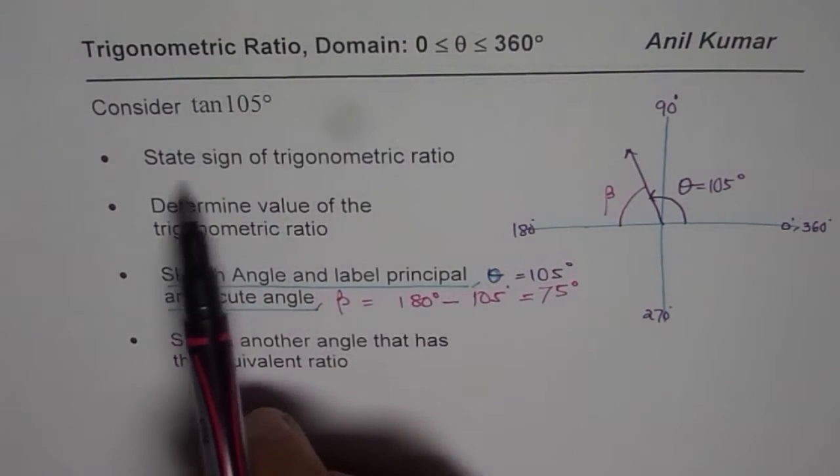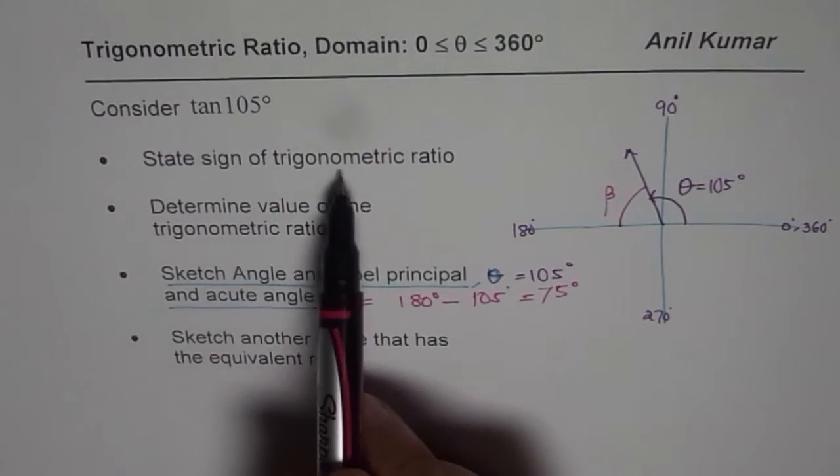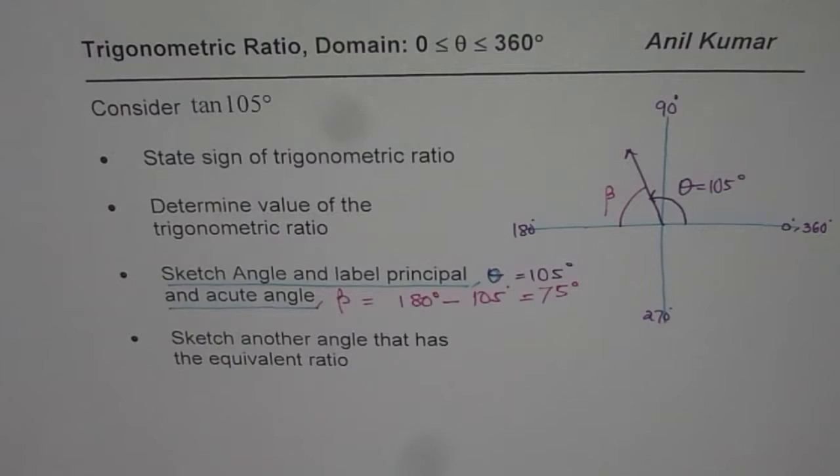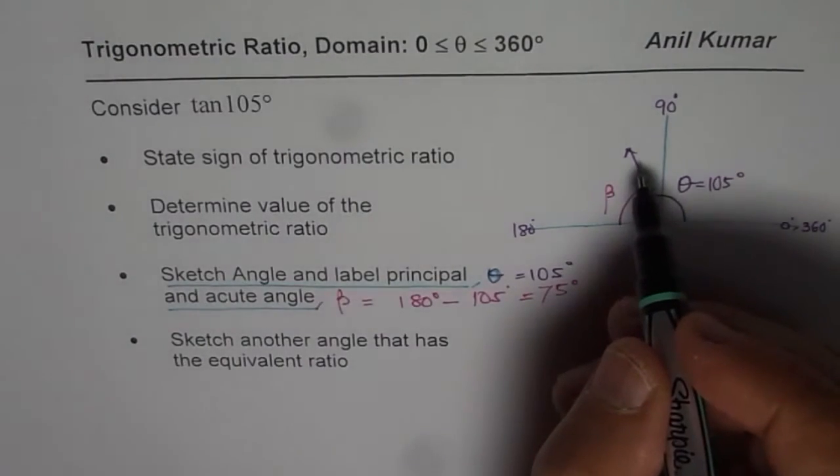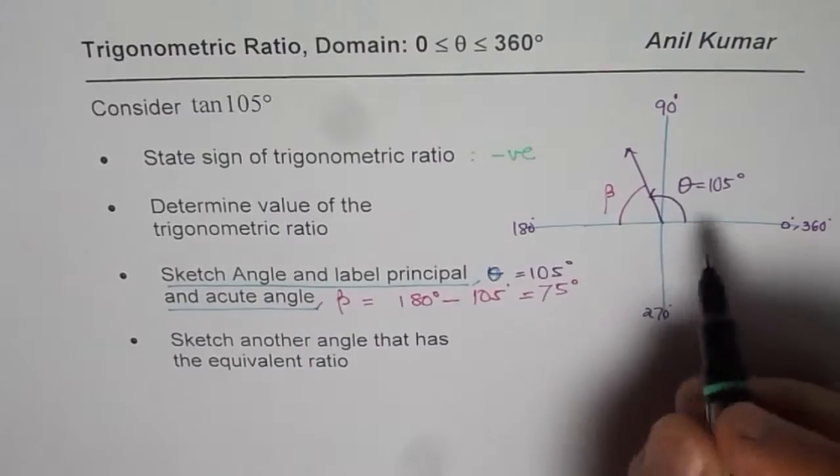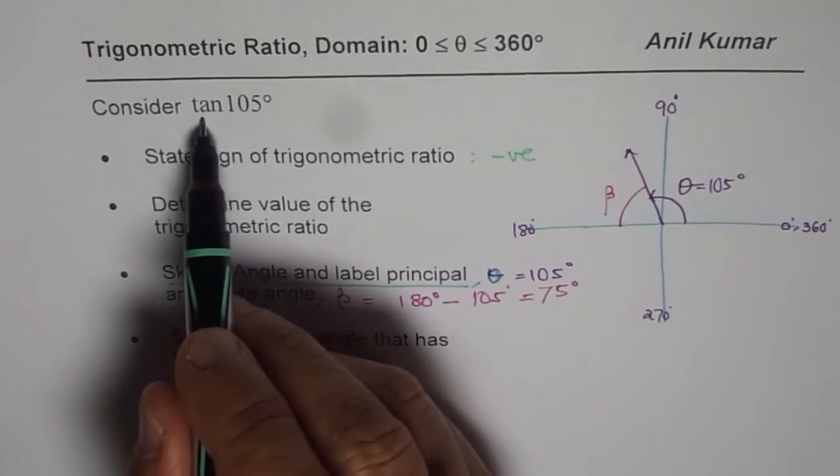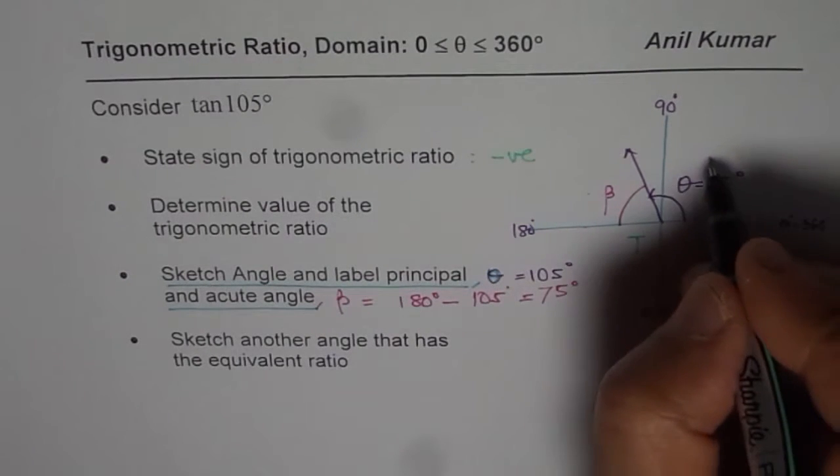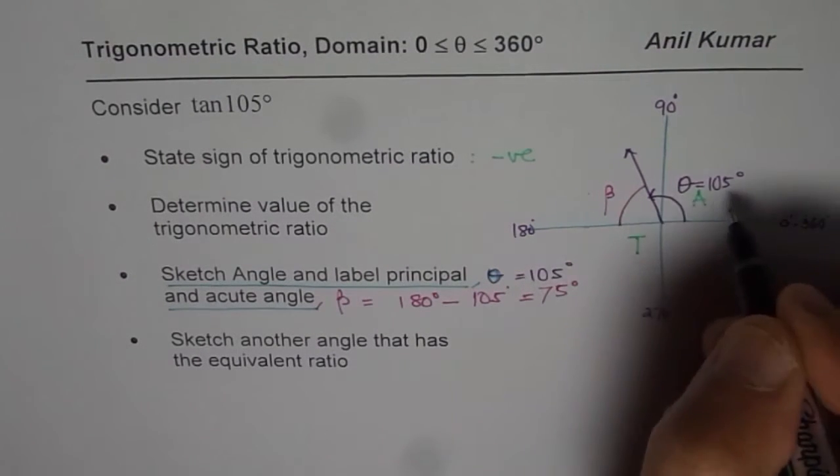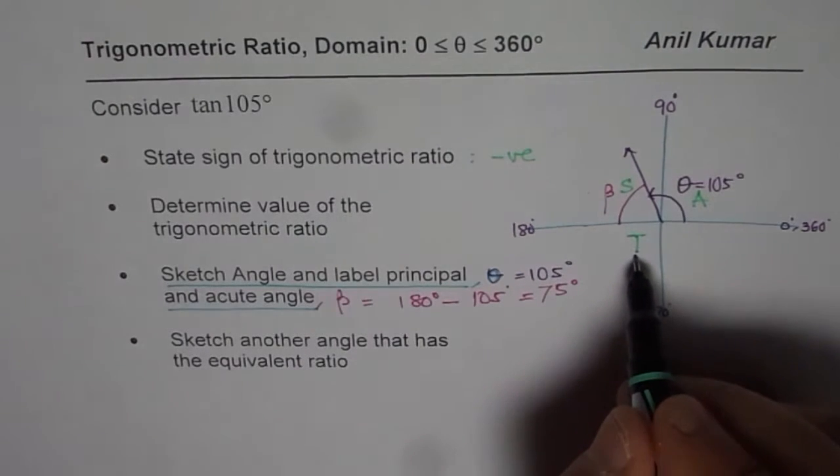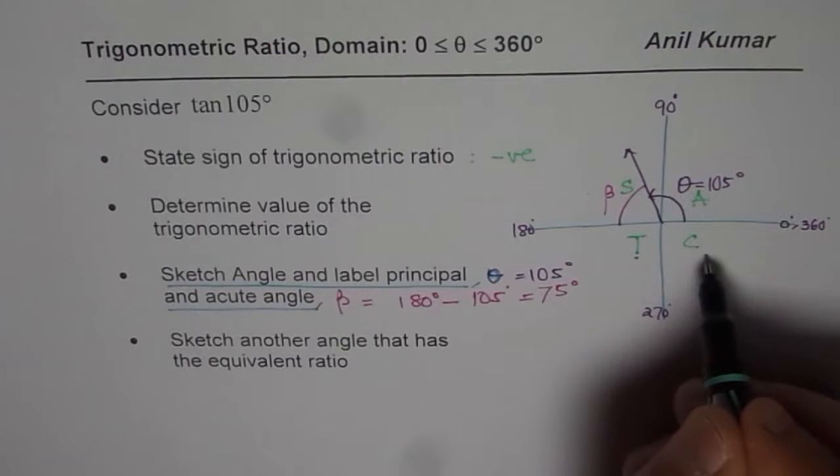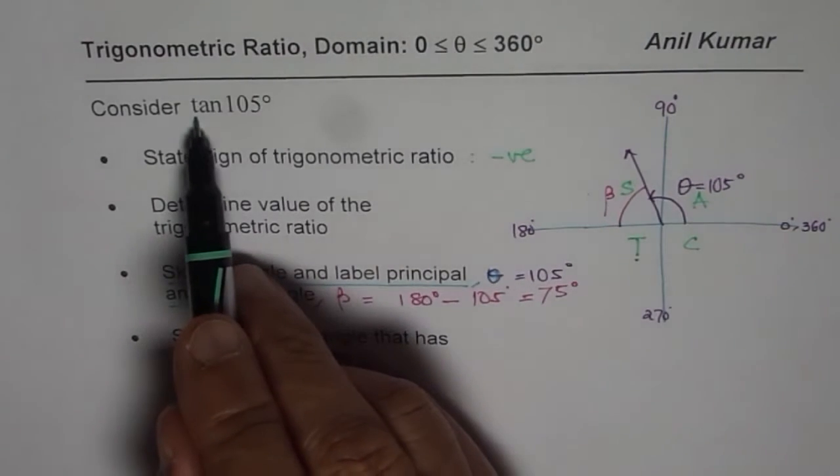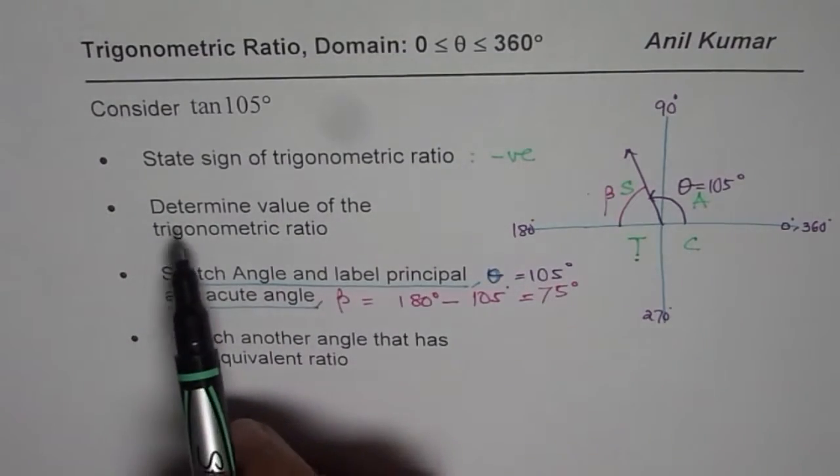Now let us begin with the very first part which says state sign of trigonometric ratio. We want tan of 105. Since we are in quadrant 2, the sign has to be negative. When is tan positive? Tan is positive in quadrant 3, not in 2 or in 4. In quadrant 1 all are positive, in quadrant 2 sine is positive, tan is positive in quadrant 3 and cosine is positive in quadrant 4. Since the terminal arm is in quadrant 2, we know the sign of tan 105 should be negative.